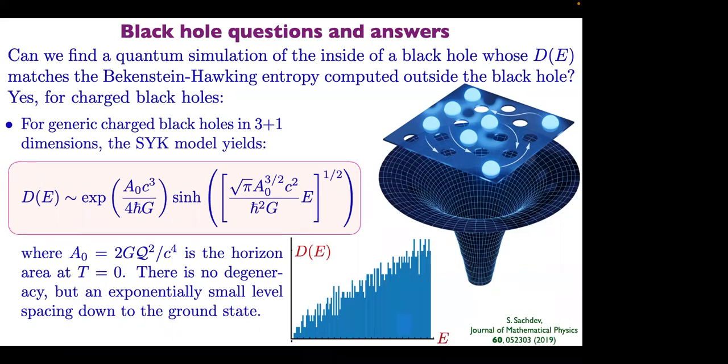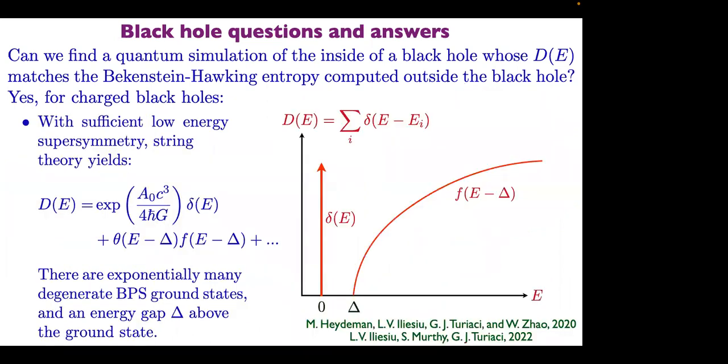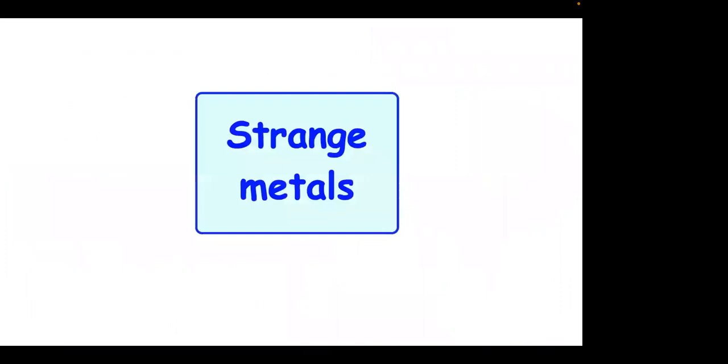Let me quickly flash something about strange metals. In strange metals: they're found everywhere, they have linear resistivity, a T-log-T specific heat, strange behavior in optical conductivity with various logarithms, and marginal Fermi liquid self-energies.